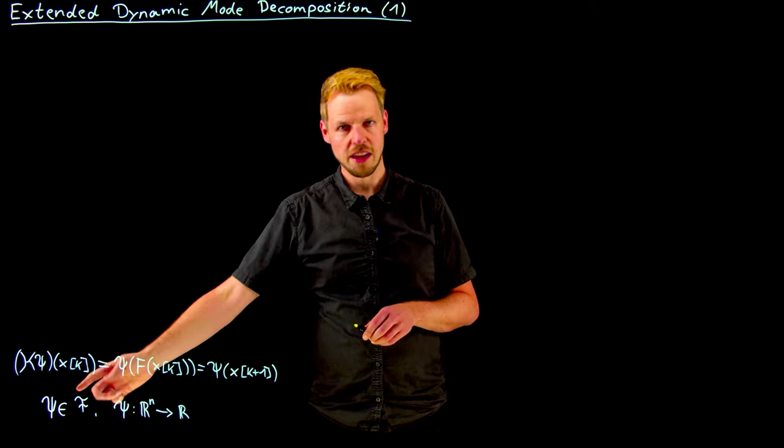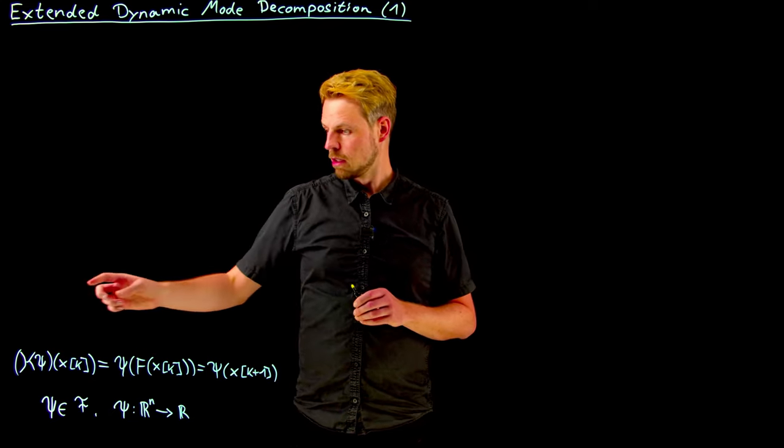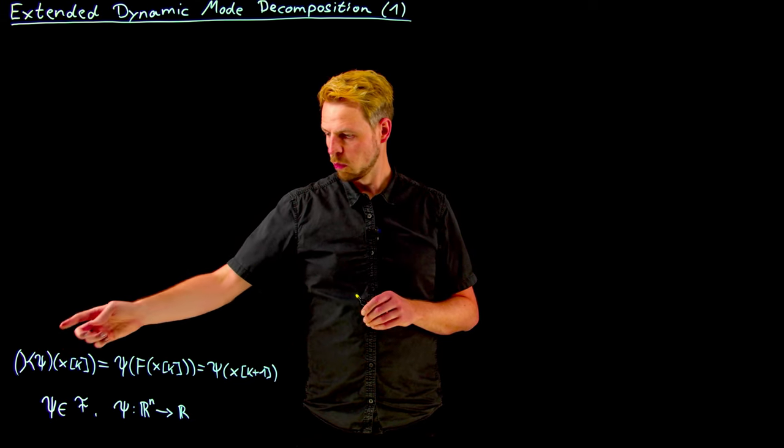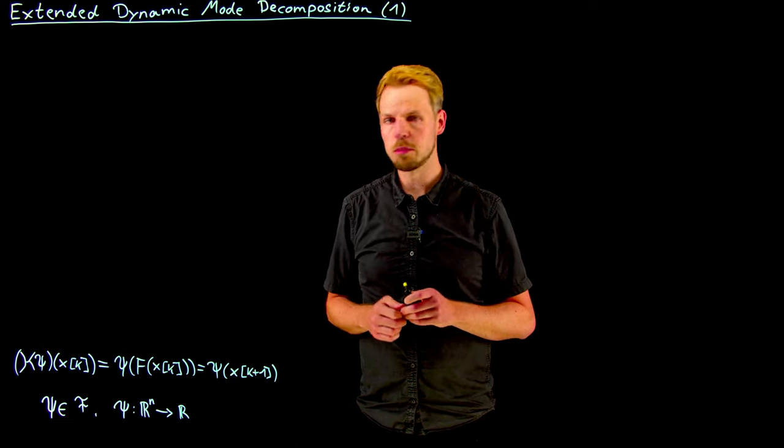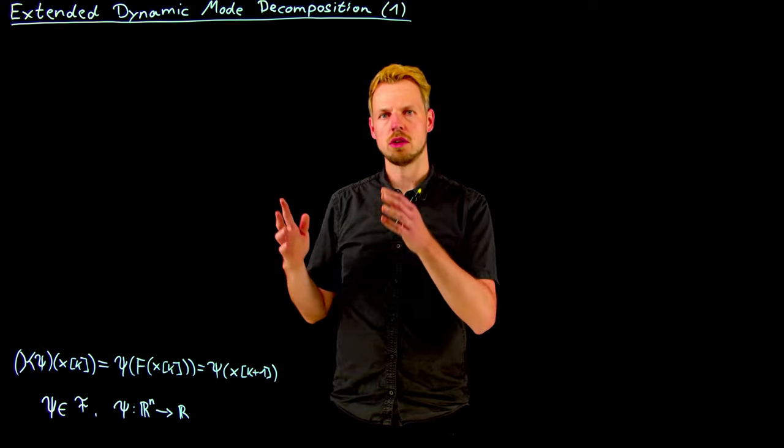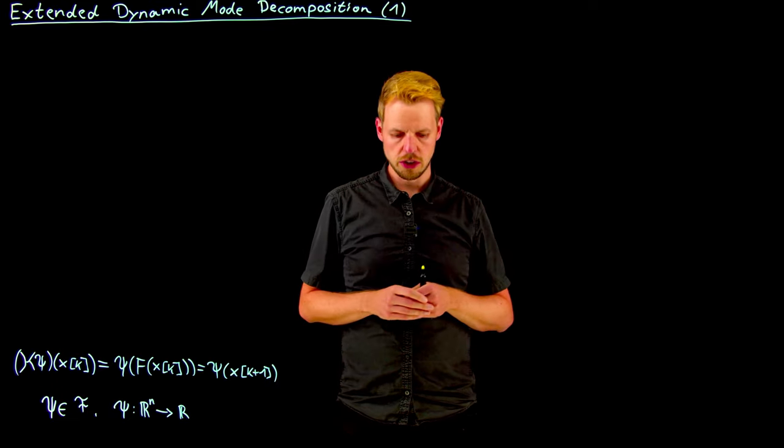So general space F or L2 in previous videos. It's a linear operator that if we compose it with the flow gives us a linear advancement in time of this observable function. We trade nonlinearity on the state space by linearity in an infinite dimensional function space.